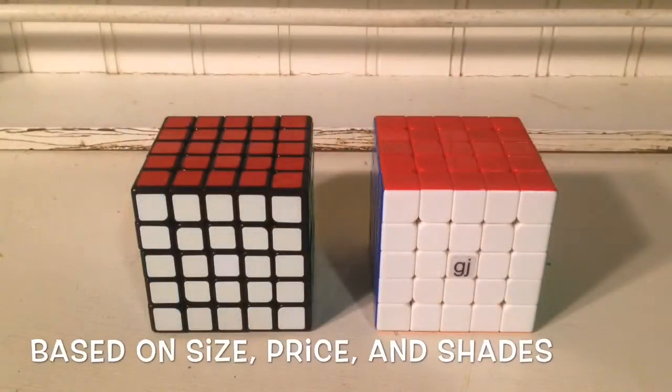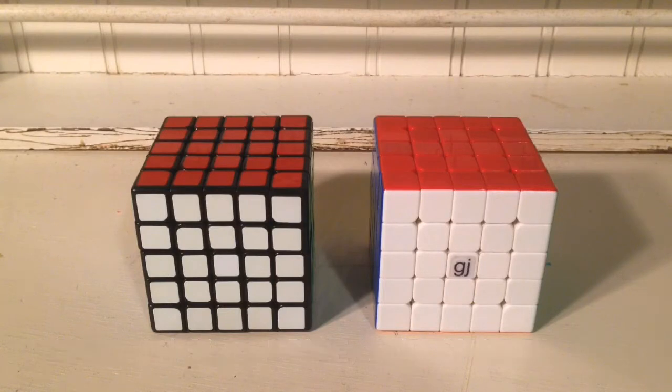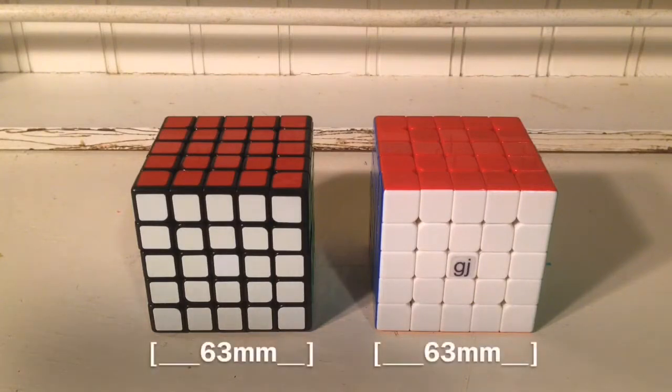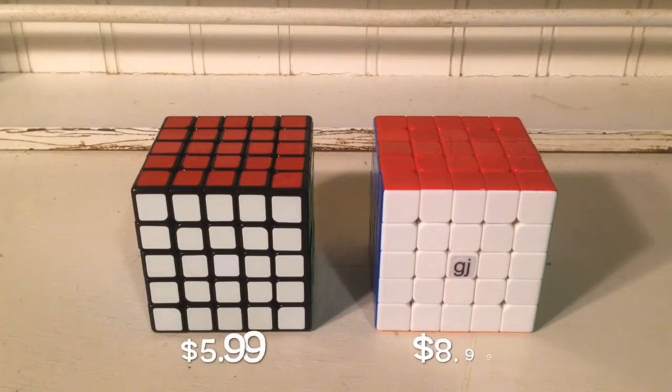The first category we're going over is the basics. Starting off with their size, these cubes are both 63mm by 63mm. The MF5 comes in at $6 on thecubicle.us, and the YuXin comes in at $9.